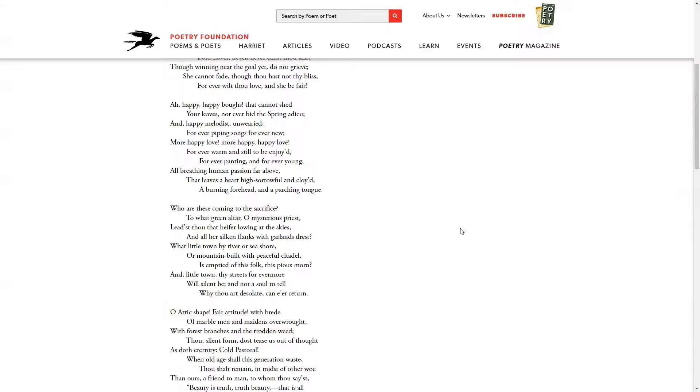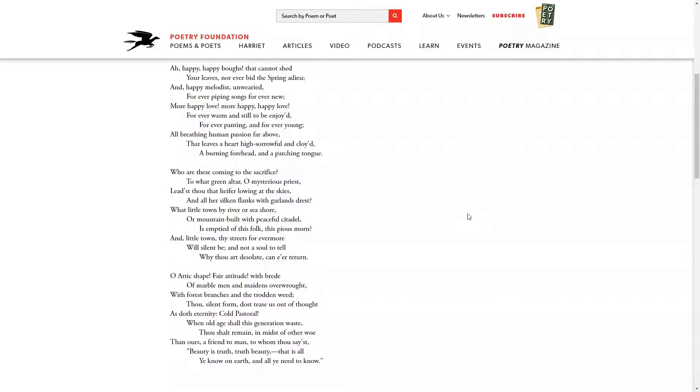Who are these coming to sacrifice? To what green altar, O mysterious priest, leadst thou that heifer, lowing at the skies, and all her silken flanks with garland dressed. What little town by river, seashore, or mountain built with peaceful citadel, is emptied of this folk, this pious morn. And the little town, thy streets forevermore, will silent be, and not a soul to tell, why thou art desolate, can ever return.